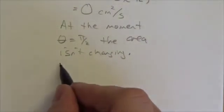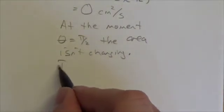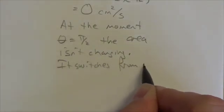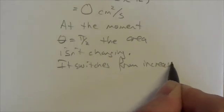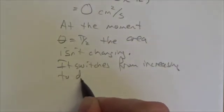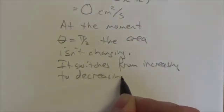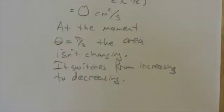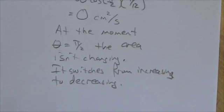Basically what's happening here is it's changing directions. It switches from increasing to decreasing. So what we're seeing here is like a maximum or a minimum. Now in this case it turns out it is a maximum. That π/2 is going to be where the maximum area occurs. Just an interesting little property of related rates.